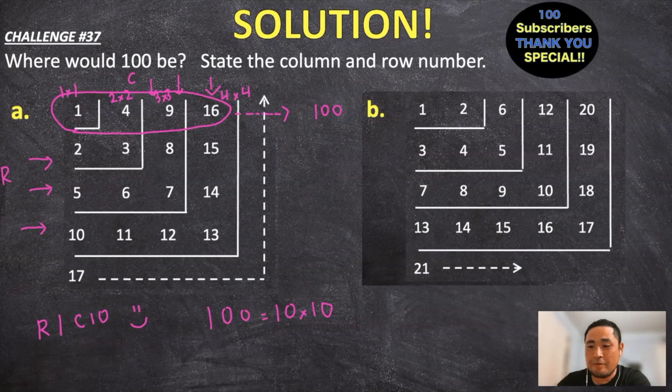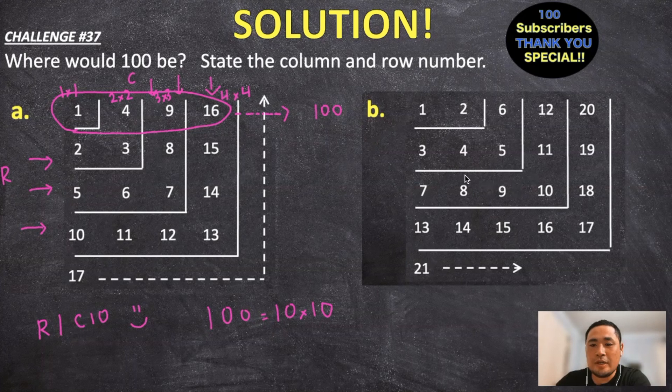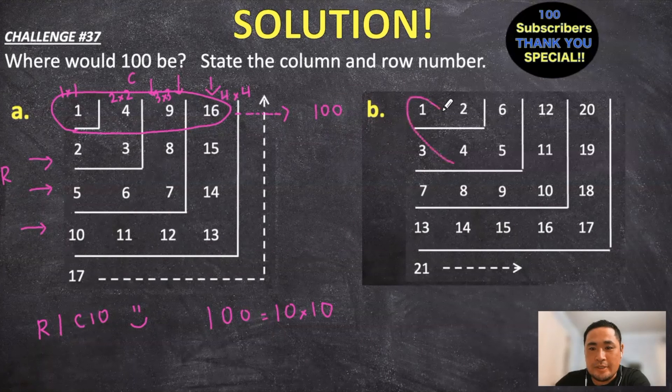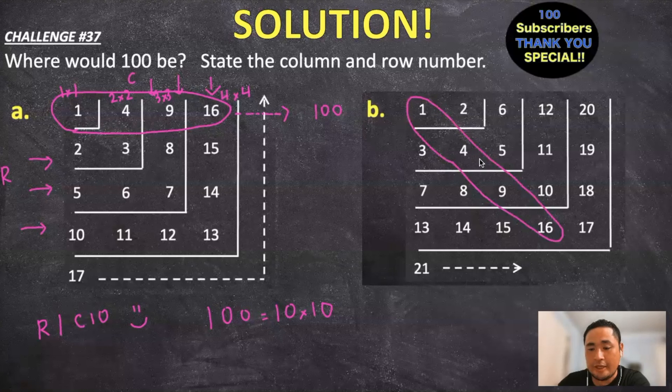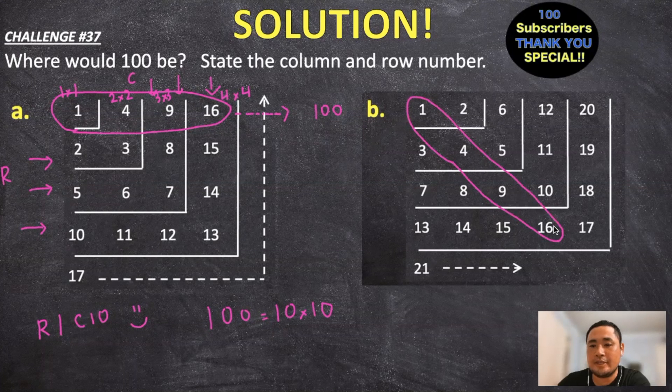If we know the pattern for the first problem, we can apply it to the second one. So for part B, we can see the same set of pattern of numbers right here going diagonally across: 1, 4, 9, and 16.